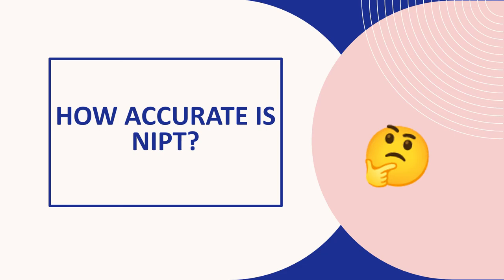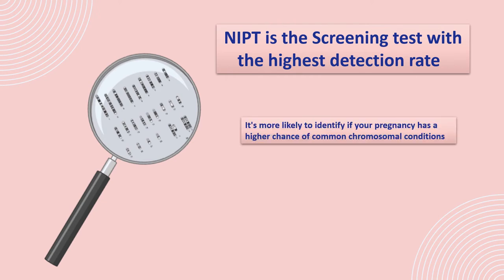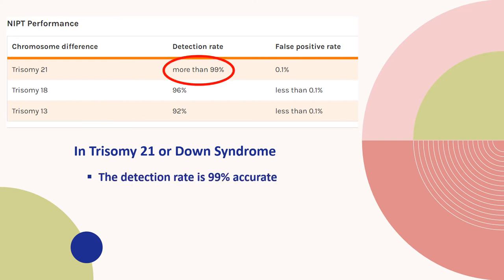So how accurate is NIPT? NIPT is the screening test with the highest detection rate, meaning it is more likely to identify whether your pregnancy has a higher chance for a common chromosomal condition. For example, in Trisomy 21 or Down syndrome, the detection rate is 99% accurate, with a false positive rate of less than 1%.